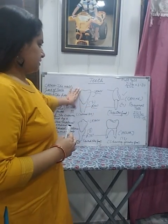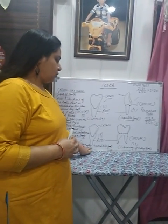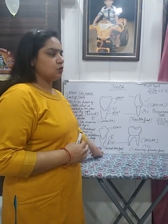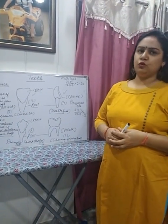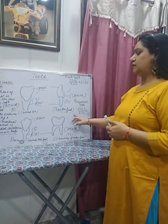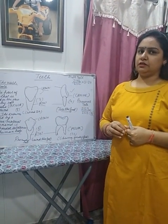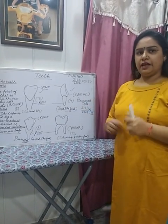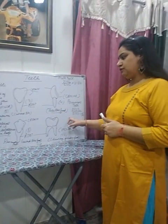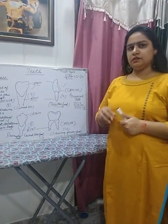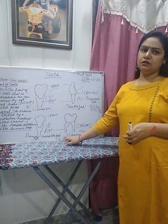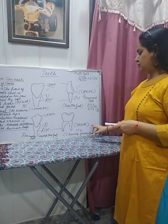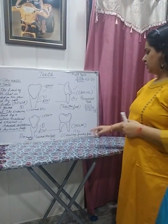We have now discussed all four types of teeth: incisors, canines, premolars, and molars. The function of the incisors is to cut and bite the food. The canine is a pointed, sharp tooth and it helps to tear the food. The premolar is a flattened tooth and it helps us to grind the food. The molar helps us with chewing and grinding the food.